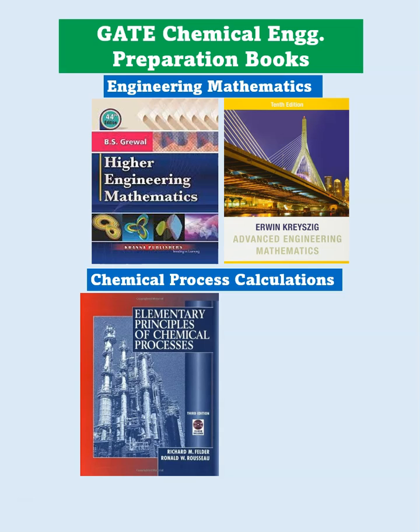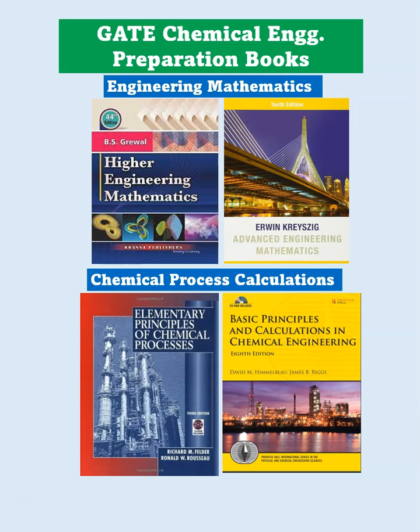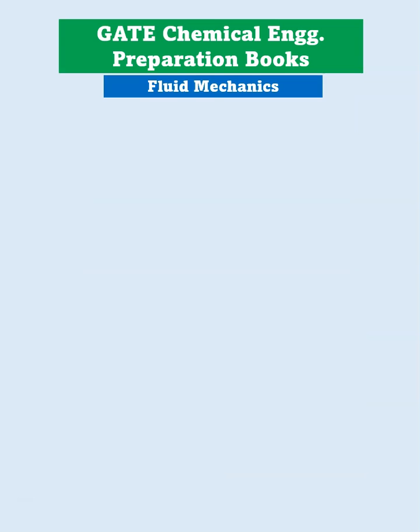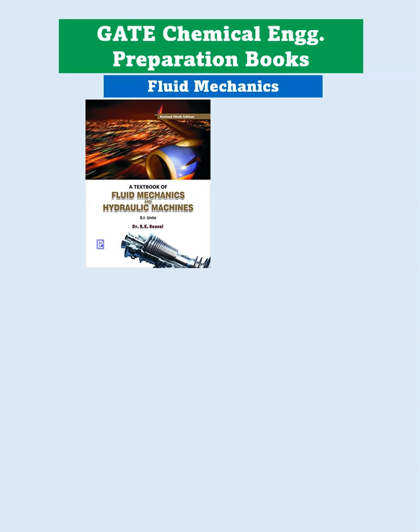For Chemical Process Calculations, one book is Elementary Principles of Chemical Processes by Felder and Rousseau. Another book is Basic Principles and Calculations in Chemical Engineering by Himmelblau.